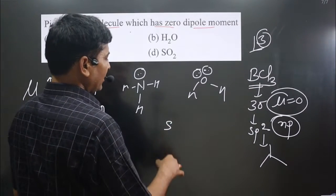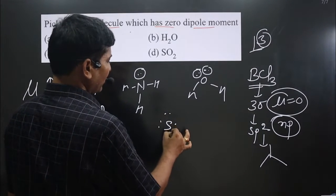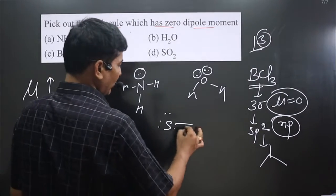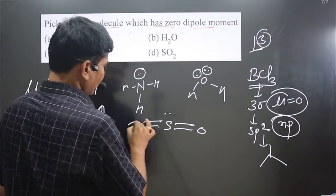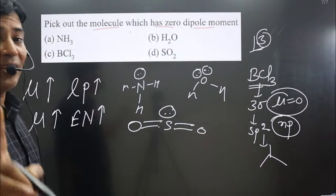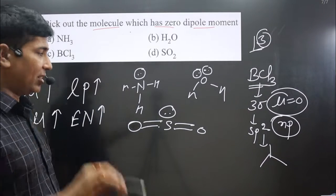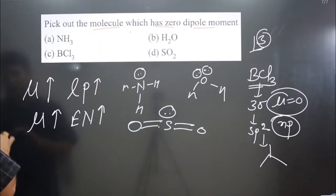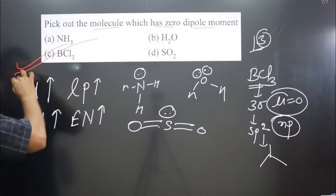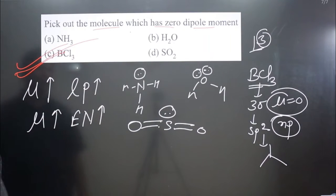If we also talk about SO₂ — sulfur has six valence electrons, and you can see it is having a lone pair. If lone pair is there, dipole moment will not be zero. So we get zero dipole moment only in the case of BCl₃. Option C is correct. If you like this video, please share and subscribe to the channel.